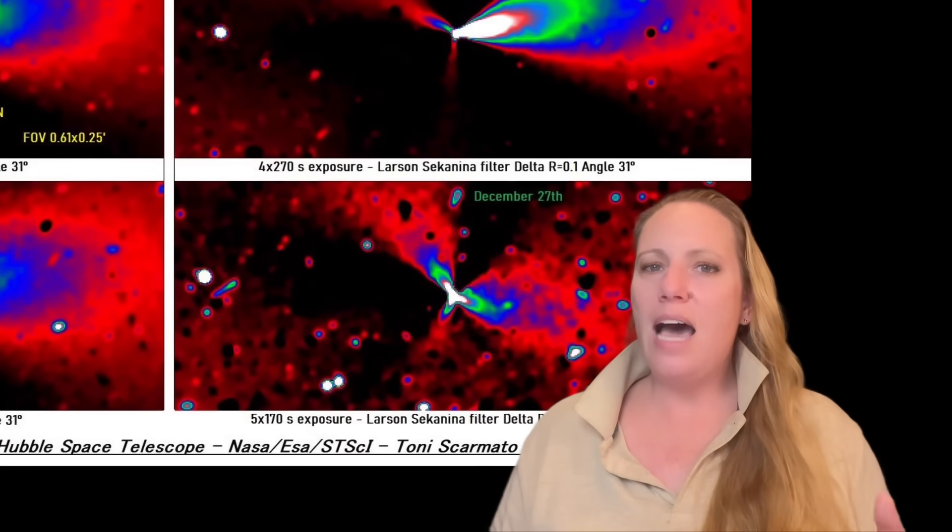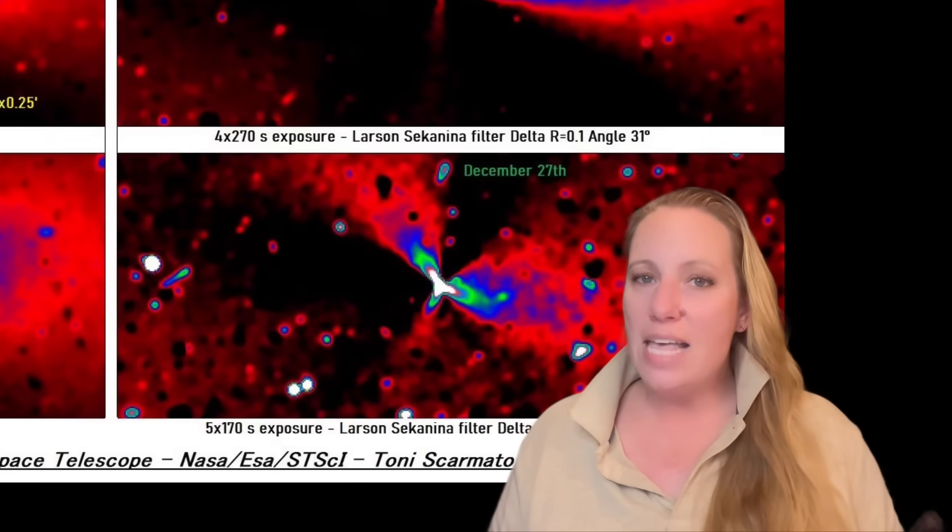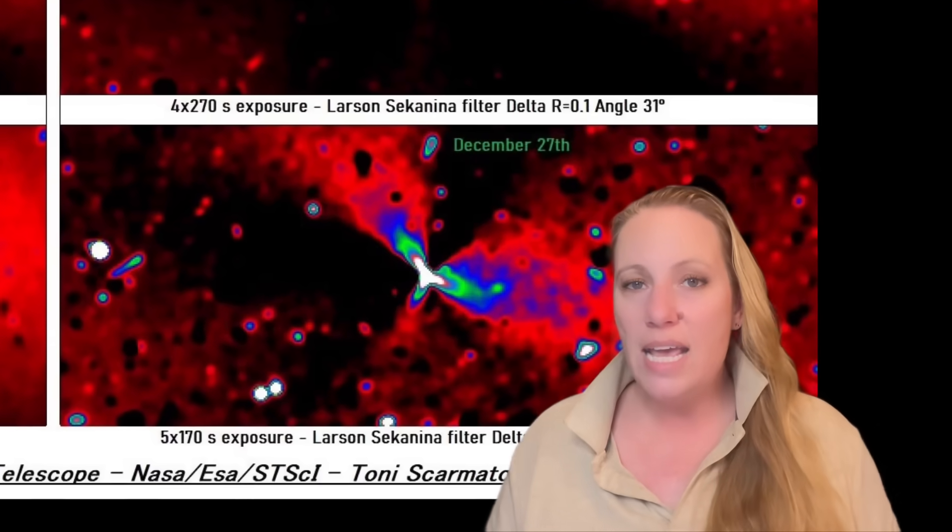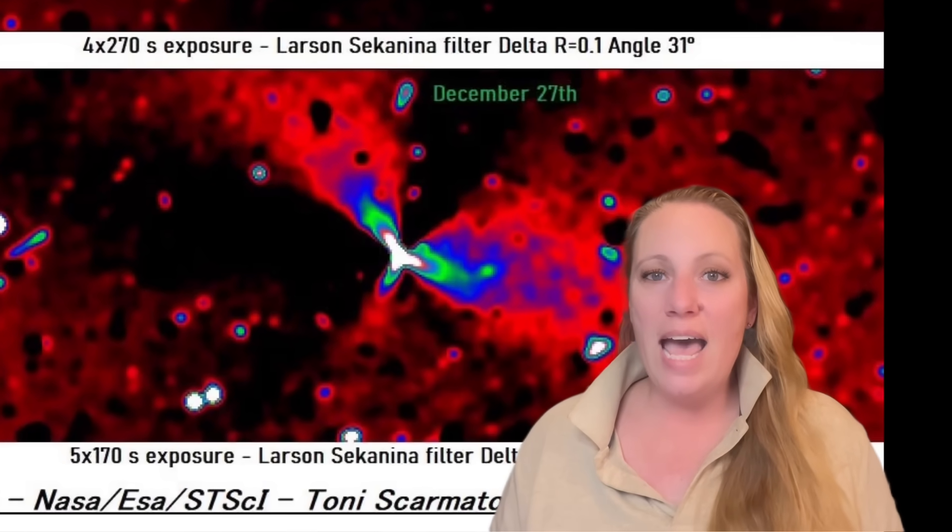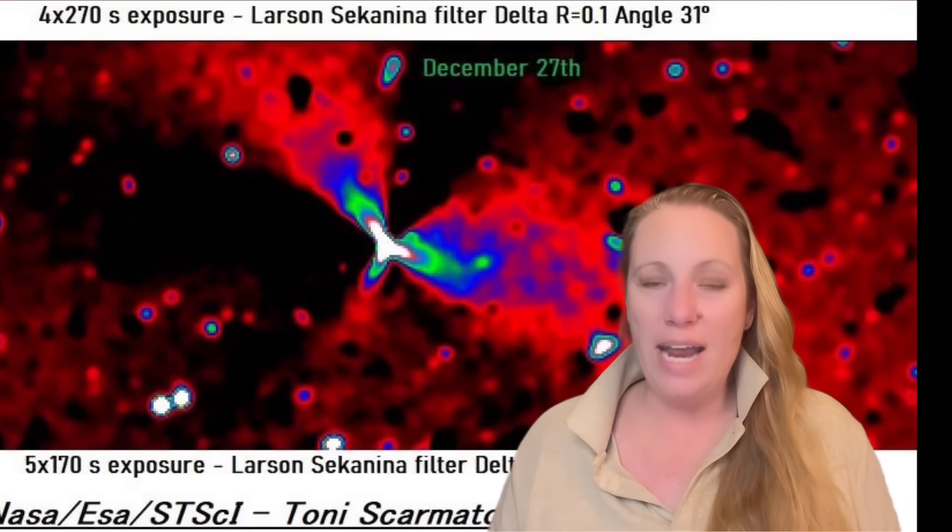The anomalies, these anomalous features as we know, and that's what we've talked about the most, is this anti-tail, this jet that is directed towards the sun and how it is directed towards the sun. And it appears before and after perihelion, which is absolutely strange. Perihelion is the point when 3i Atlas was closest to the sun.